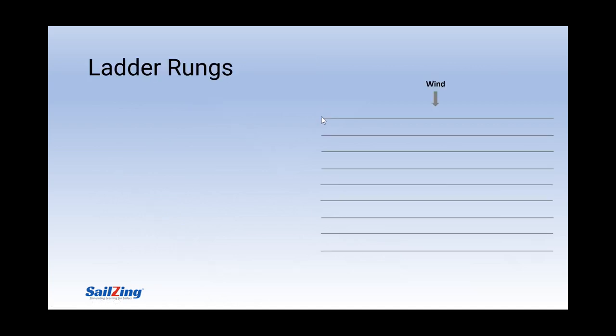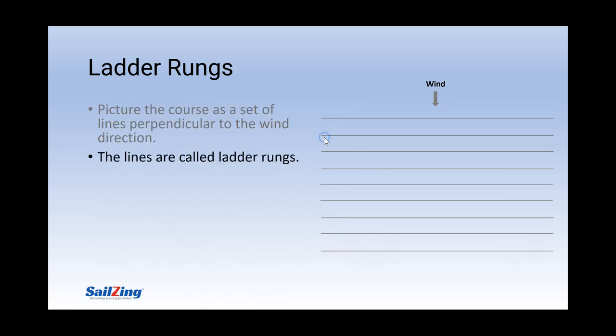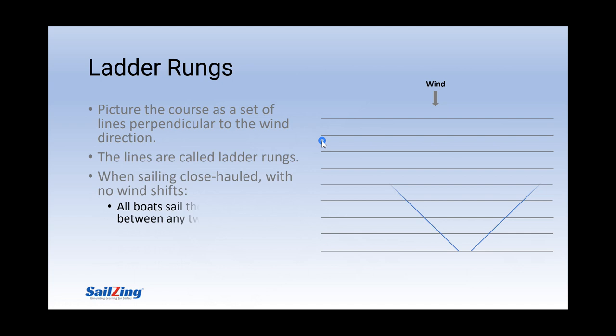Now let's use the concept of ladder rungs to understand this better. Picture the course as a set of lines perpendicular to the wind direction. These are called ladder rungs. As we saw in the last slide, when sailing close hauled, with no wind shifts, and assuming equal pointing ability, all boats sail the same distance between any two ladder rungs.